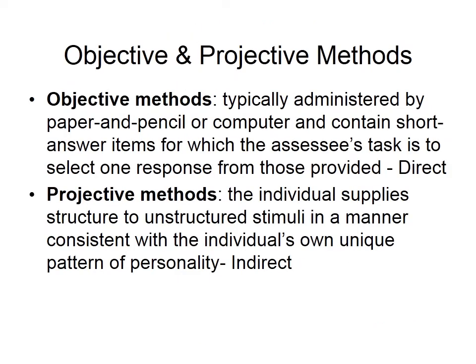We also talked about objective versus projective measurement methods. These lectures go into the big picture rather than every individual test, though you should still know the dimensions of each test from the study guide. Objective measures are typically administered by paper and pencil or computer, consist of short answer items, and require the test-taker to select one response from those provided. It's a direct measure — people answer questions related to personality, their answers are scored, and those scores provide validatable data.